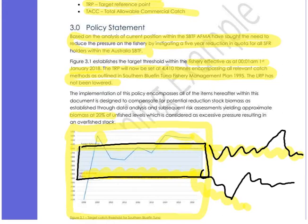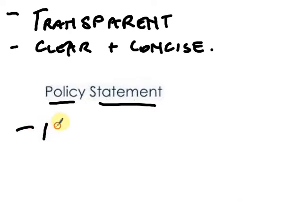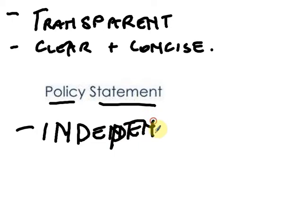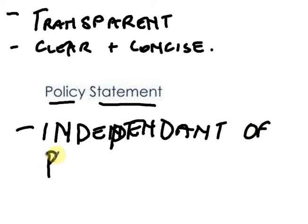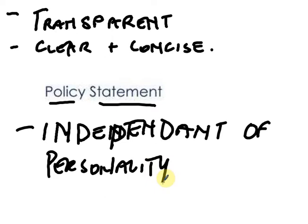The policy itself can't be personalized. It needs to be independent of personality. The I's, the we's, the us's should be omitted. Don't write your policy like it's a school assignment — it should be a statement that is backed up with further evidence running through the document itself.